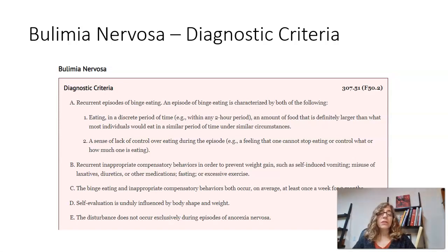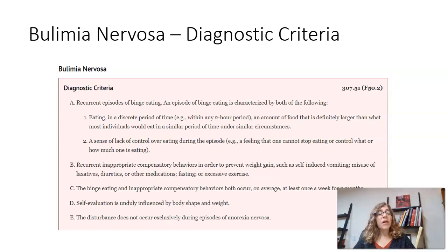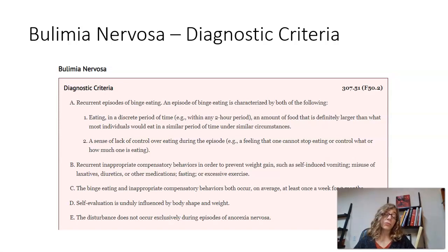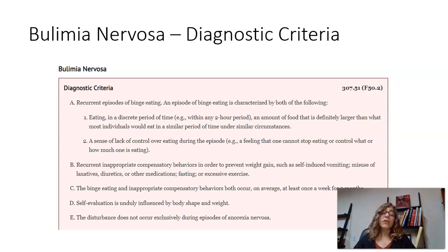There is also a frequency and duration criterion. In criterion D, self-evaluation is unduly influenced by body shape and weight. In other words, somebody's entire sense of herself has to do with what she sees on the scale — five pounds up and she hates herself, has a horrible day, which might actually lead to more bingeing and purging. On a lower-weight day she'll feel better about herself, but her whole sense of self is reliant on her weight.